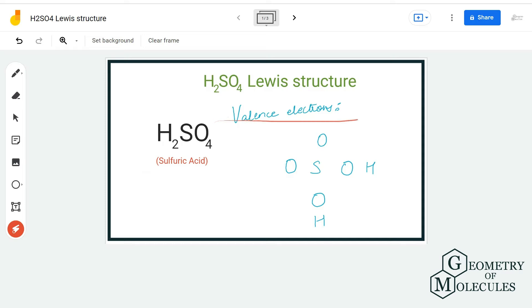Here we have two hydrogen atoms that are forming bonds with this SO4 group. Each hydrogen atom has one valence electron in its outer shell. Sulfur and oxygen both have six valence electrons in their outer shell, so we have a total of 32 valence electrons for this molecule.